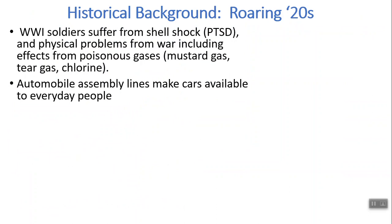Automobile assembly lines made cars available to everyday people. Before, when we just had horses, you'd have to take very long rides. I'm reading a book right now where a boy's family takes basically a whole weekend to go visit an uncle who lives 10 miles away. Cars also — and this is important in Fitzgerald's story — really changed dating. Before the car, you don't really have a teenage culture. People went to school for a time, then became adults and went to work in the factory or on the farm.